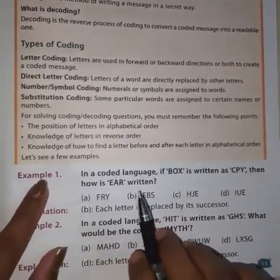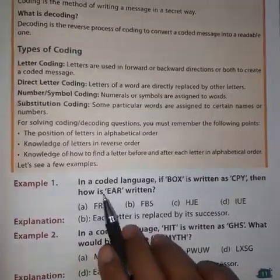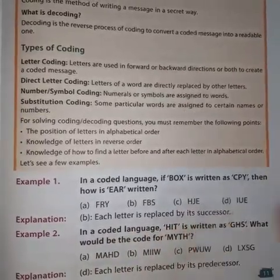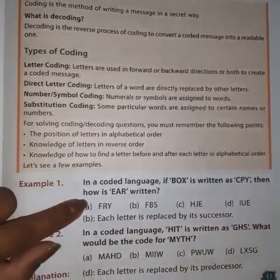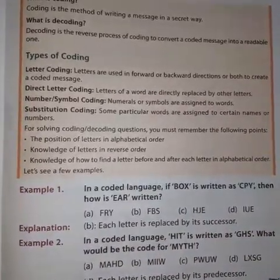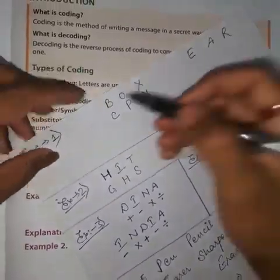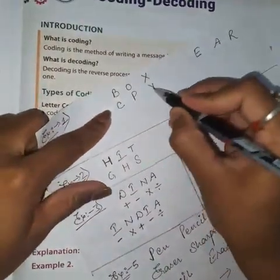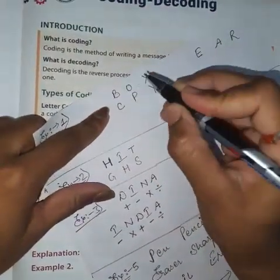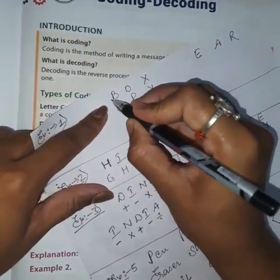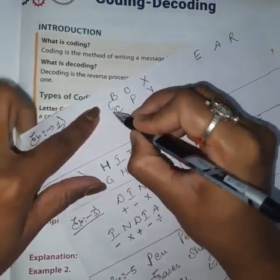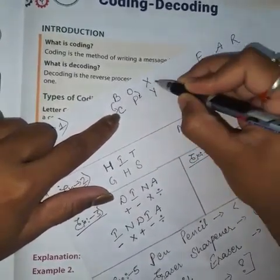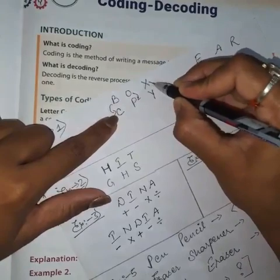Example number one, which is related to letter coding. In a coded language, if BOX is written as CPY, then how is EAR written? Let's identify what is happening: what comes after B is C, what comes after O is P, and what comes after X is Y.